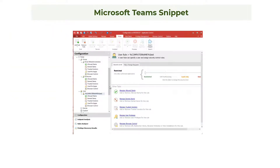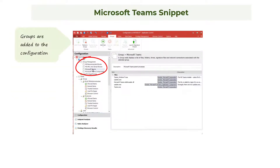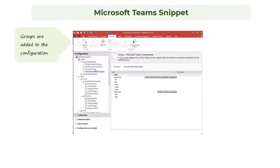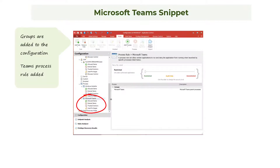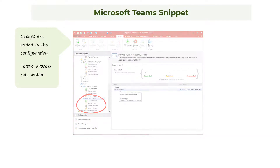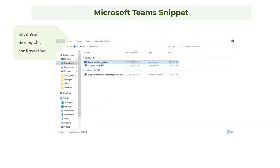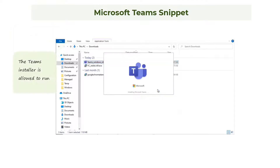The snippet adds required groups to our configuration. The Teams component group lists the DLLs and other file types that are opened by Teams. The Teams group itself lists the executables used to run Teams from the desktop. A Microsoft Teams process rule has also been added, stating that anything in the Teams group is allowed to run anything in the Teams components group. We now save and deploy our configuration, and our test user tries again to run the Teams installer. This time the action is allowed, and Teams successfully installs and opens.